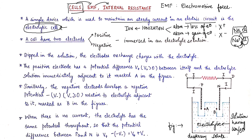One example is NaCl: when separated we get Na+ and Cl−. One electron is transferred from Na to Cl to form such a bond. These are the ions. When ions combine, they form a molecule. This is ionization, which happens in an electrolyte. The cell has two electrodes — one positive, one negative — and as ions form in the electrolyte, these electrodes play an important role.